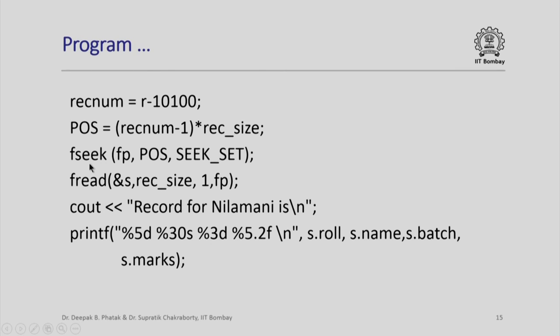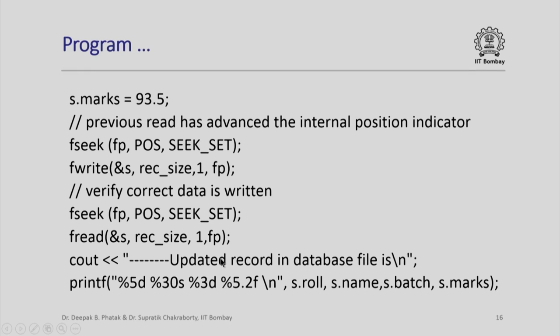We calculate the position of the starting byte of that record number by simply saying pos equals rec_num minus 1 times rec_size. Now, we do an fseek which will directly take the internal file pointer to the desired position pos. Once we go there, we simply read a record. This will be the desired record. In fact, we print out the record of Nilamani and this is the detailed information. But this is about reading.